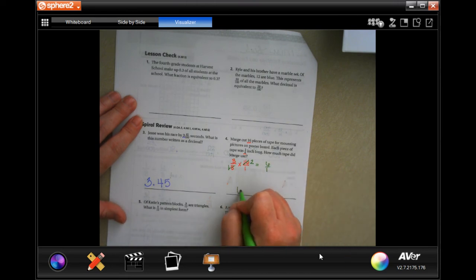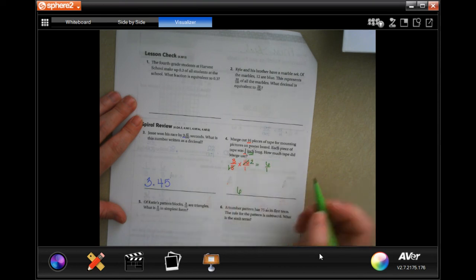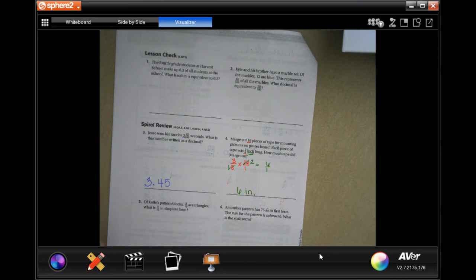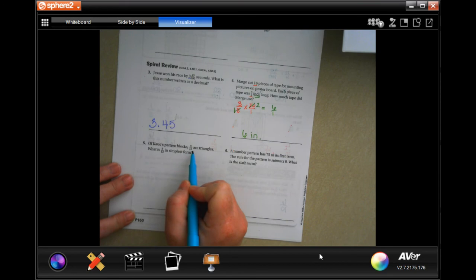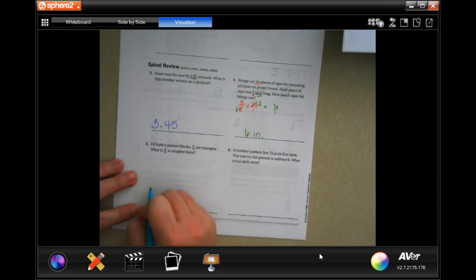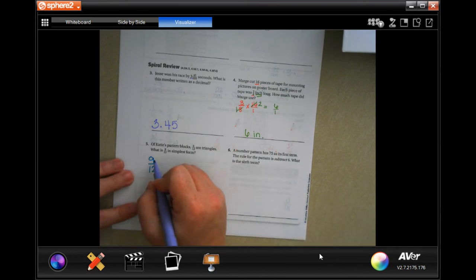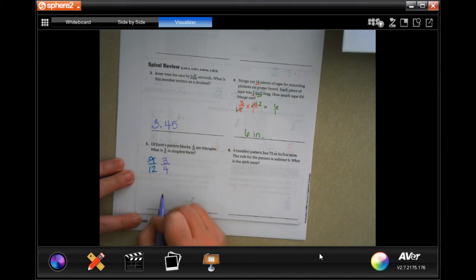Of Katie's pattern blocks, 9/12 are triangles. What is 9/12 in simplest form? Well, 9 over 12. Three goes into 9 and three goes into 12. Three goes into 9 three times and three goes into 12 four times, which makes 3/4 its simplest form.